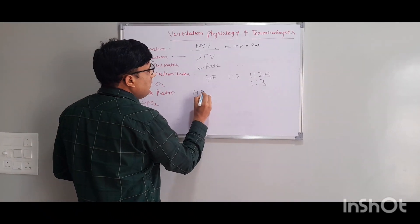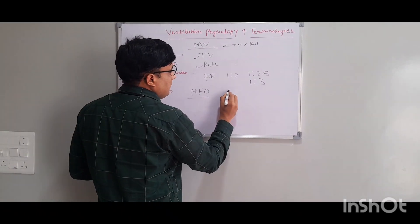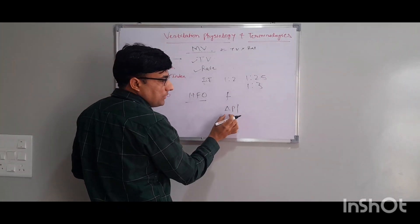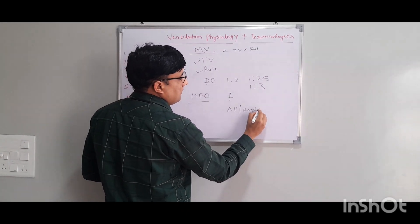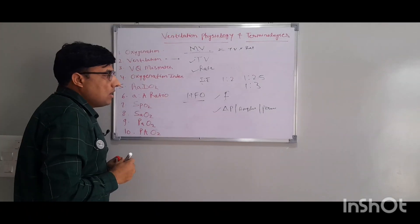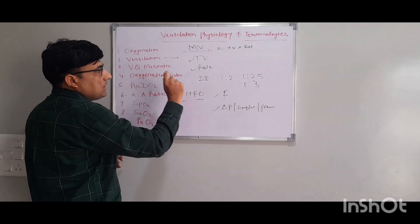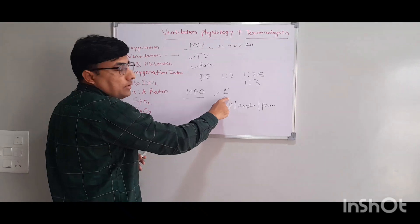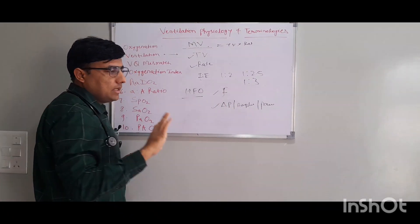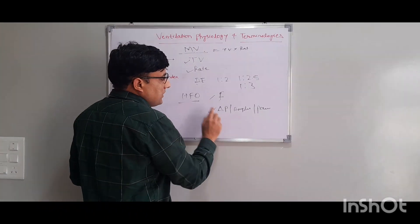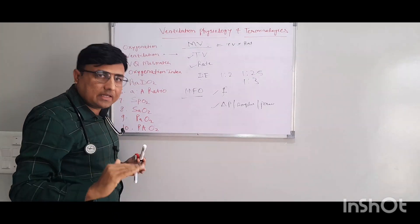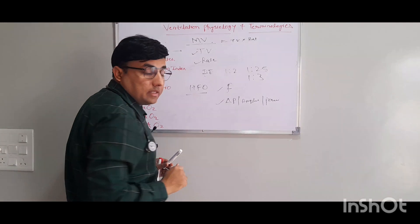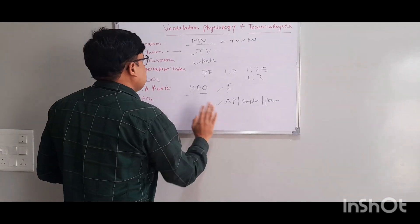Coming to HFO: in HFO, ventilation depends on two things — first is the frequency or rate, and second is the power, also called delta P or amplitude. These two things directly control ventilation in HFO. Importantly, the opposite happens compared to conventional ventilation: in conventional ventilation you increase rate to increase washout, but in HFO you reduce the frequency. To increase CO2 washout in HFO, you increase delta P or amplitude directly.